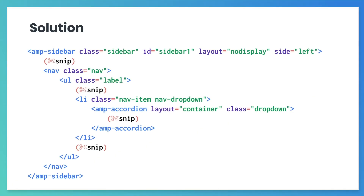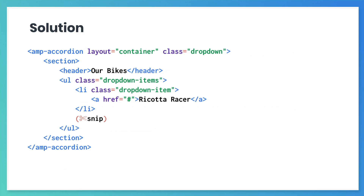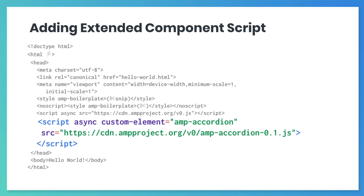And here's the solution. We can't fit all of this on screen, but here's how the AMP Accordion fits inside the AMP Sidebar. Notice the new class we added on the LI tag that encloses the AMP Accordion. And here's what's inside the AMP Accordion itself. We provided just one LI example to show how it would look. As usual, remember to add the extended component script for AMP Accordion in the head tag as shown on screen.